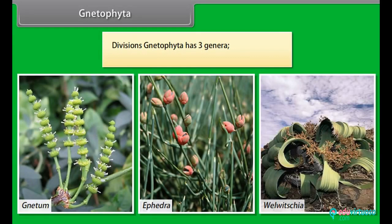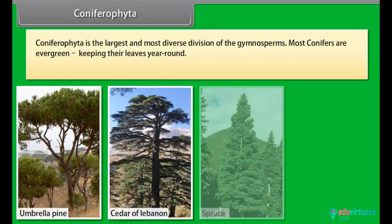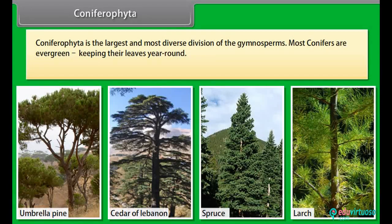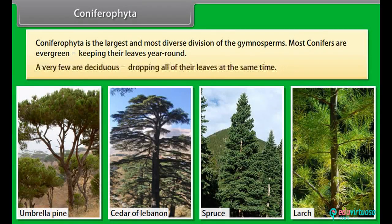Division Gnetophyta has three genera: Gnetum, Ephedra, and Welwitschia. Coniferophyta is the largest and most diverse division of gymnosperms. Most conifers are evergreen, keeping their leaves year round. A very few are deciduous, dropping all of their leaves at the same time.